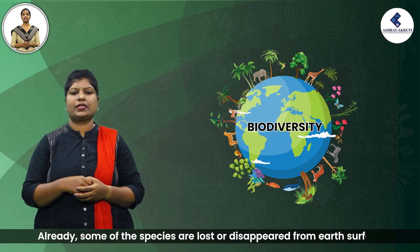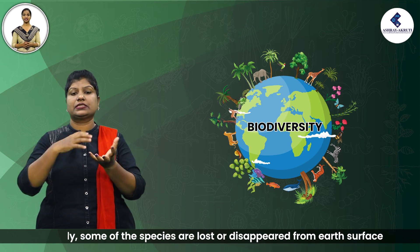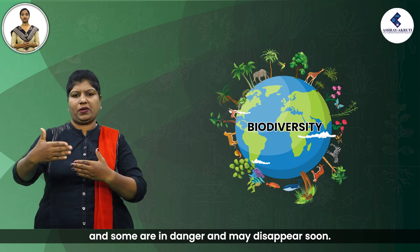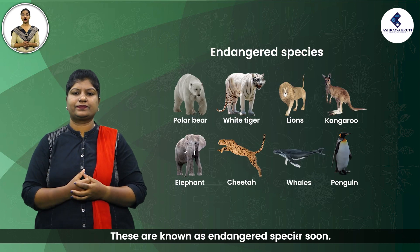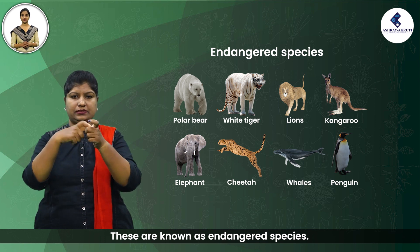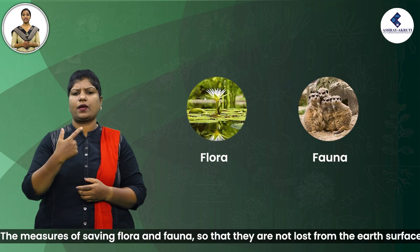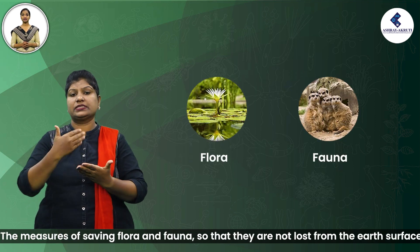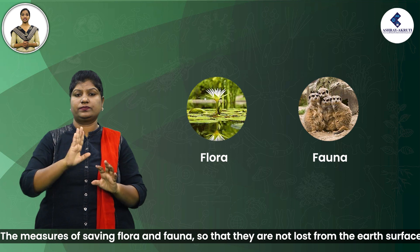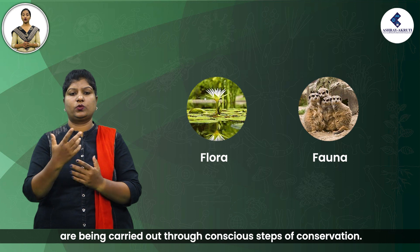Already some species are lost or have disappeared from the earth's surface, and some are in danger and may disappear soon. These are known as endangered species. The measures of saving flora and fauna so that they are not lost from the earth's surface are being carried out through conscious steps of conservation.